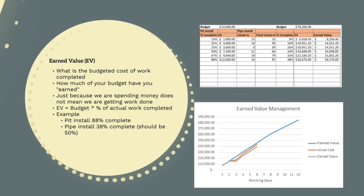For pit install, we've installed one pit and completed 75% of the second pit, meaning we've completed 88% of the overall scope. The earned value of the pit install is then $14,400 by 88% equals $12,600. For the drainage pipe install, we've completed 38% of our original budget, which was $70,200, meaning our earned value is 38% of this, which is $26,676. When we sum these together, we get an overall earned value of $39,276.